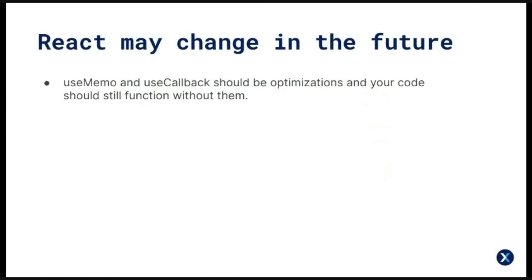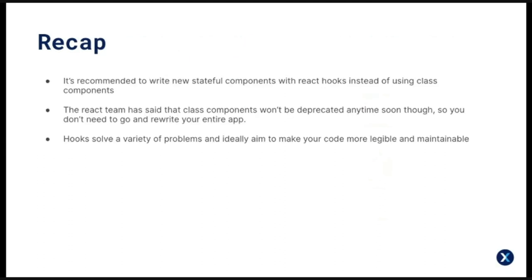One final point: the React team has stated that in the future React may choose to forget some previously memoized values and recalculate them — for example, to free memory for off-screen components. So you should write your code in a way that it still works without useMemo, and just use these hooks afterwards to optimize for performance. As a recap: it's recommended to write new stateful components with React hooks instead of class components, though the React team has said they won't be deprecating class components anytime soon. Hooks solve a variety of problems and aim to make your code more legible and maintainable. Use useState to manage state in functional components, and use useMemo or useCallback to optimize re-renders for complex operations.